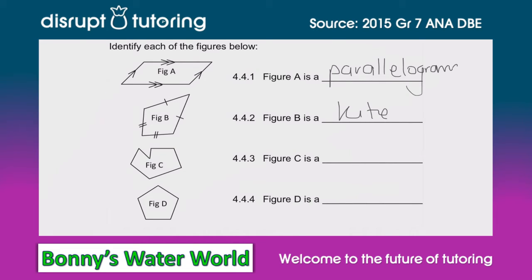Moving on to the next one, and this is a trickier one because it's a shape we've probably never seen before and there isn't anything clear or obvious about it. We do notice that there are seven sides, but I'm going to give it a general name because those sides are not regular at all. We're going to call this shape an irregular polygon. That is a catch-all phrase for any shape that doesn't necessarily have any distinct features about it.